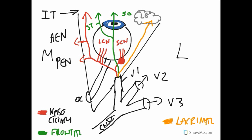As well as supplying the lacrimal gland, the lacrimal nerve also supplies the conjunctiva laterally and the lateral part of the upper eyelid. On the face of it, we've got most of our sensory territory covered via V1 from the nasociliary, frontal, and lacrimal nerves. However, just as there is complexity with the nasociliary because of the ciliary ganglion and autonomics, the lacrimal nerve also has sympathetics and parasympathetics traveling to it.